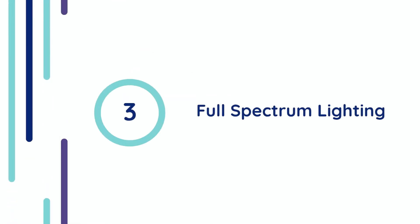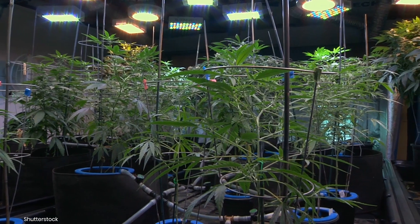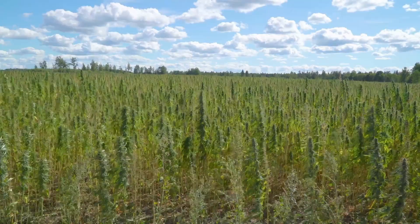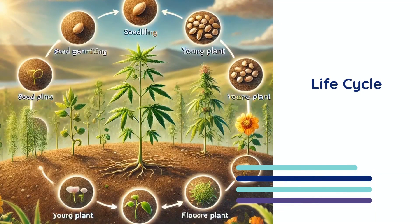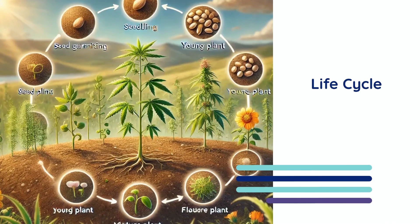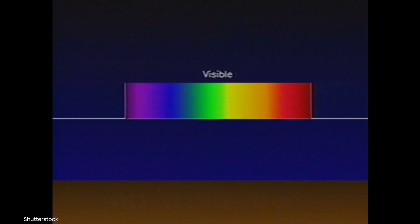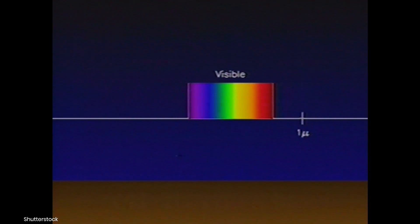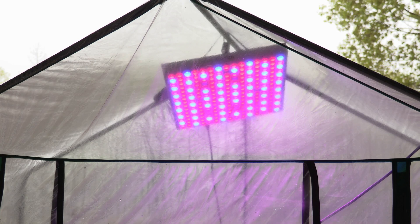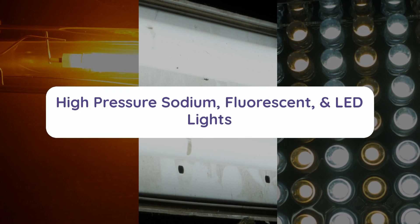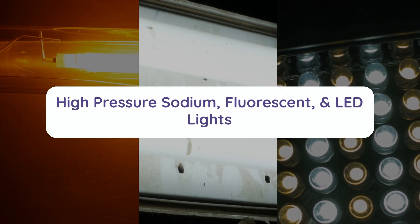Chapter 3: Full-Spectrum Lighting. Full-spectrum lights are designed to mimic natural sunlight, providing a balanced range of wavelengths that can support a cannabis plant throughout its entire life cycle. This type of lighting covers the entire visible spectrum, from ultraviolet (UV) through visible light — blue, green, and red — to far-red wavelengths. Traditionally, the more popular full-spectrum lighting options for cannabis cultivation include high-pressure sodium (HPS), fluorescent, and LED lights.